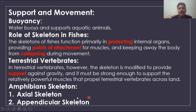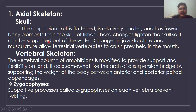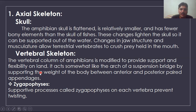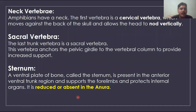The amphibian skeleton is divided into two divisions: the axial skeleton and the appendicular skeleton. The axial skeleton includes the skull, vertebral column, and in some cases the sternum. The skull is flat and small compared to fishes, allowing a reduced weight for better locomotion. The vertebral column is highly developed and flexible. Specialized projection structures called zygapophyses interlock adjacent vertebrae so the column does not collapse.